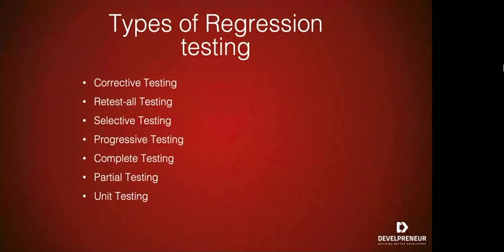Now let's look at the types of regression testing. Software maintenance is an activity which includes enhancements, error corrections, optimizations, and detection of existing features. These modifications can cause the system to work incorrectly. Therefore, regression testing becomes necessary in our testing process, and it can be carried out using the following techniques.